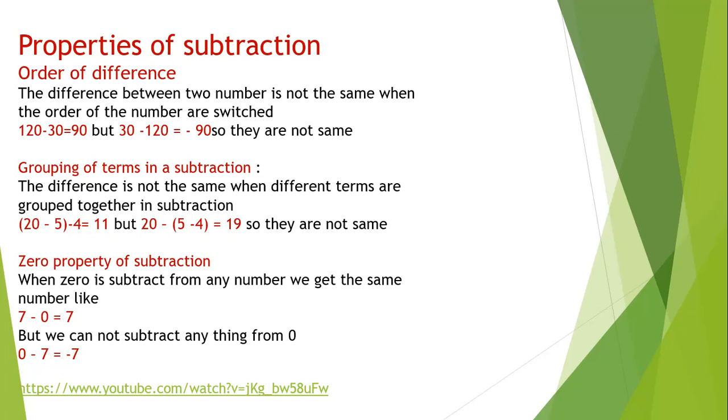Like we have 20 minus 5 is 15, minus 4 is 11. But if we group 5 minus 4, what we will do? 5 minus 4 is 1, and 20 minus 1 is 19. The answer I got is 19. They are not the same.